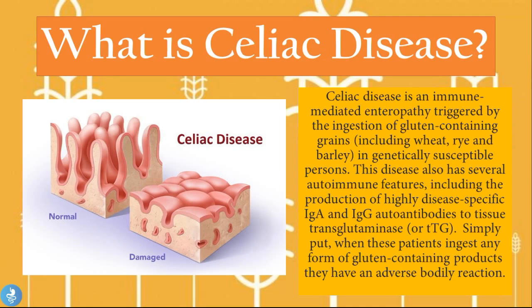Normally when we ingest these products nothing happens — they just undergo the normal digestion process. But because wheat, rye, and barley products contain transglutaminase, the body in patients with celiac disease produces autoantibodies against this transglutaminase enzyme. By doing this they target the food as it passes along the small intestine during digestion, and because the small intestine is targeted, this causes injury to it.